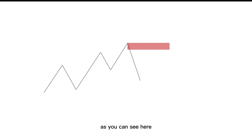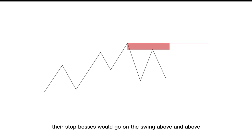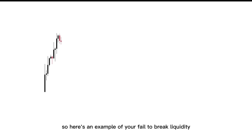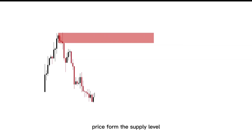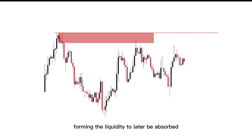Next up, you have your FTB — your fail-to-break liquidity. As you can see here, you have a supply level formed and price approaches this level and rejects. Now you have evidence that that level was valid, and retail traders might be a part of that move. So anybody that purchased price at that level, their stop losses would go on the swing above. Above that swing would be resting the stop losses, which would be your liquidity. Price would be incentivized to attack that level one more time. Here's an example — price formed the supply level, an aggressive reaction forming the liquidity to later be absorbed.